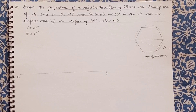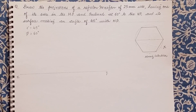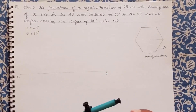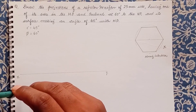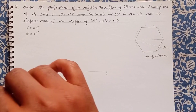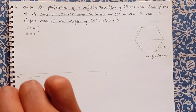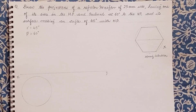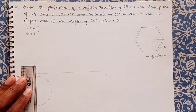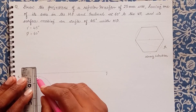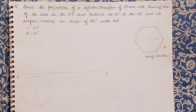Now the challenge that most students face is how to draw this hexagon. The question gives us a 25mm side. We take a distance of 25mm in the compass with the help of a ruler scale. The side of the hexagon equals the radius of the circle, so we use a circle to draw the hexagon. With a radius of 25mm, let the circle be light as this is a construction circle. Now we will draw a vertical line or construction line.